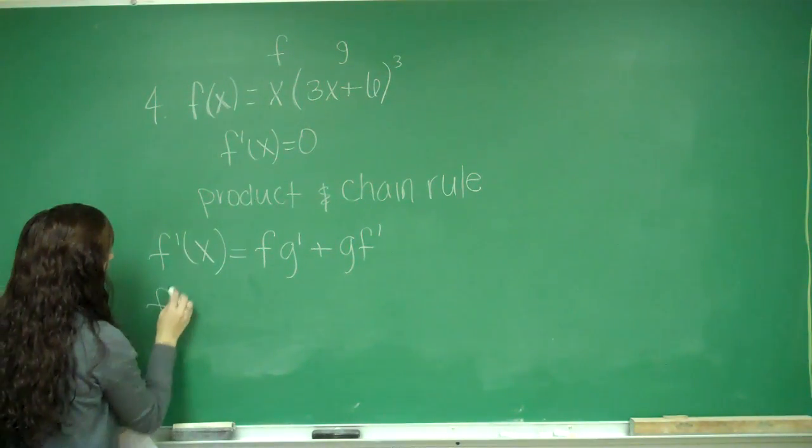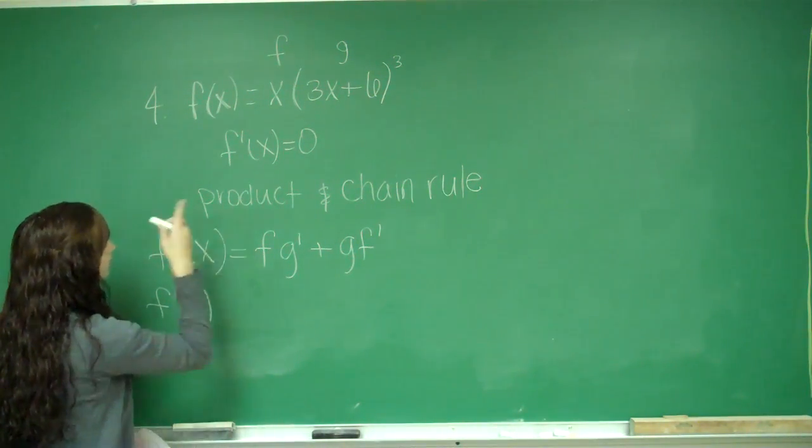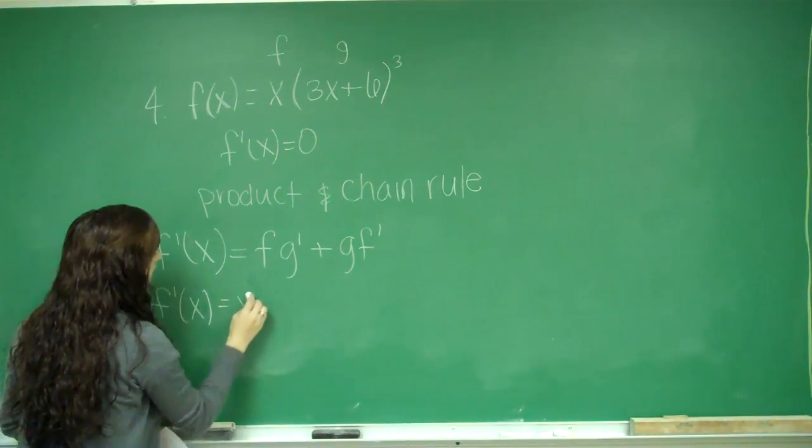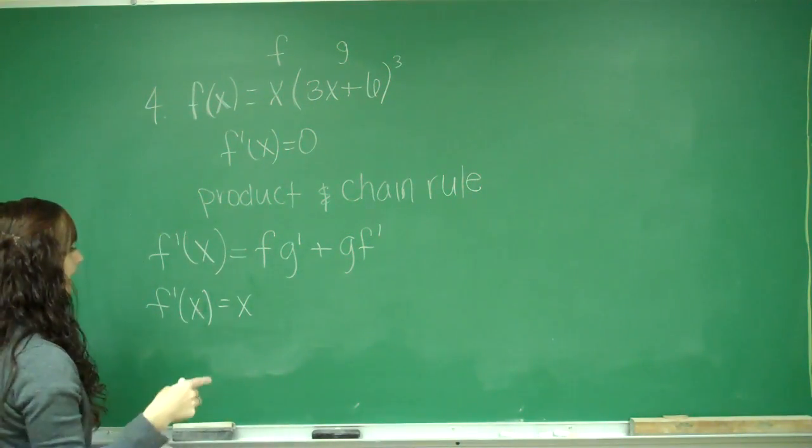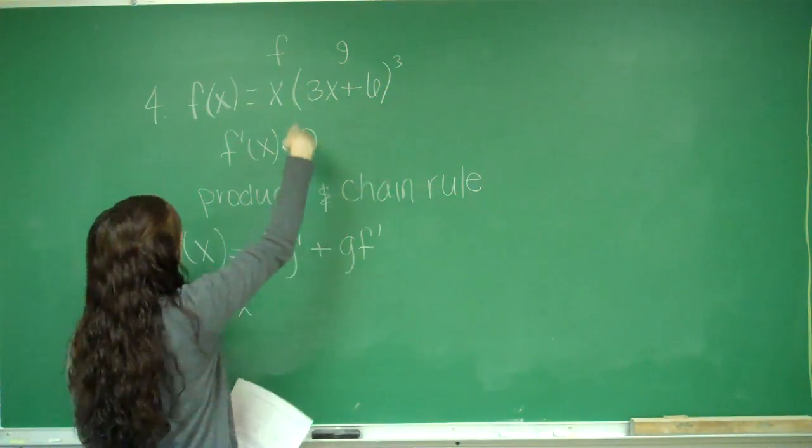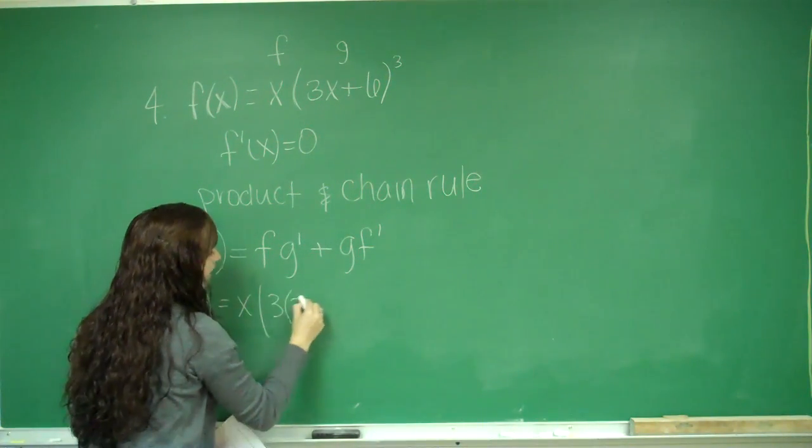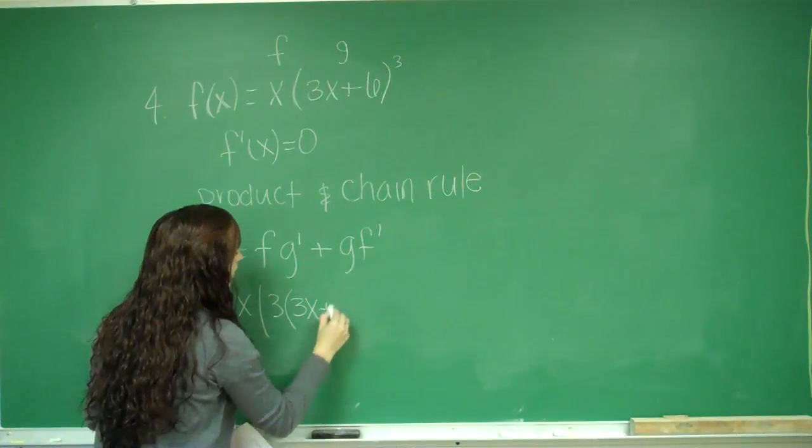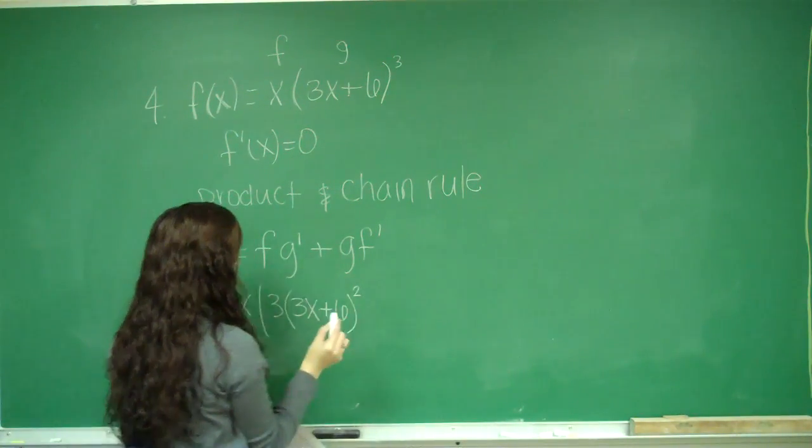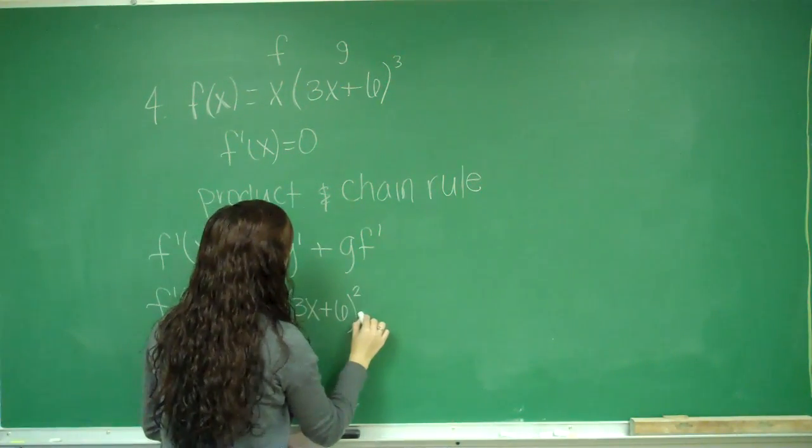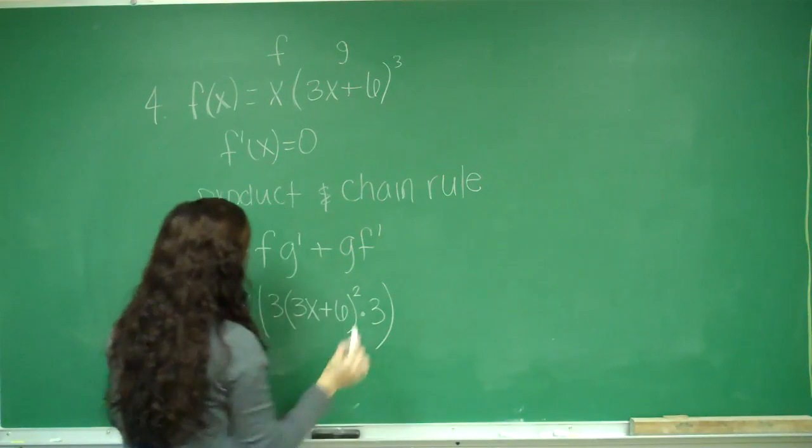So what I'm going to have is f prime of x equals f, which is x, times g prime, which I have to use the chain rule. So I bring down my exponent, I keep my inside, I subtract 1 from my exponent, and then I multiply by the derivative of the inside.